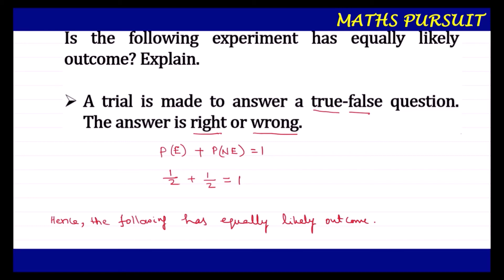You can also give the example of a coin, which has two sides — head or tail. So wherever two things are involved, that particular outcome is going to be equally likely. Hope you understood what I am trying to tell you. If you have any questions or doubts, please reach out to me in the comment section of this video.